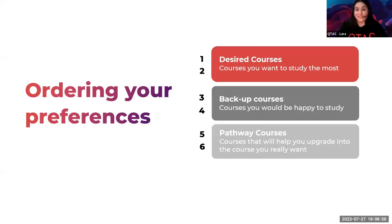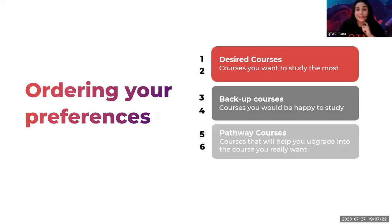So ordering your preferences. QTAC advises that one and two should be your most desired courses. Three and four are your backup courses — the courses you would be happy to study if you couldn't get straight into one and two. And then five and six are your pathway courses — the courses that will help you upgrade into the course that you really want to get into.